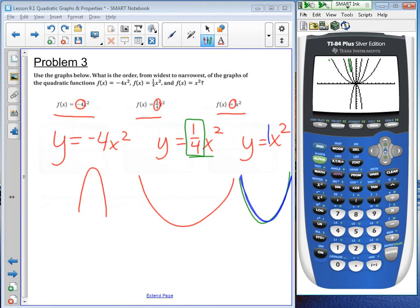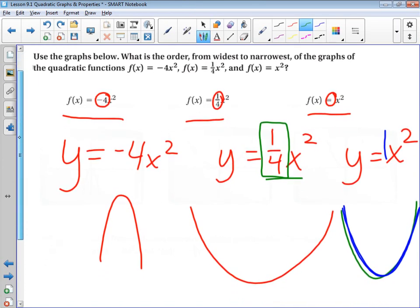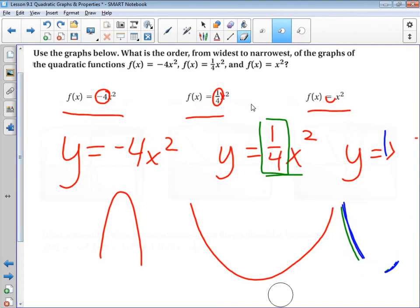So, five x squared is right here. So, the conclusion you can draw is, if the number in front of the x squared term is bigger, than the parabola, or the graph is going to be narrower.